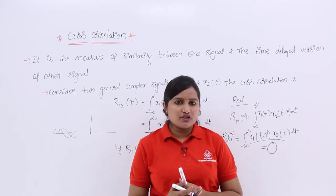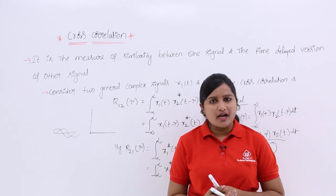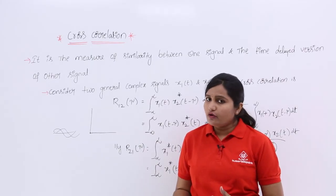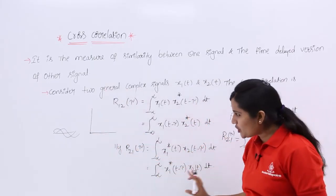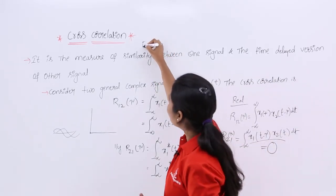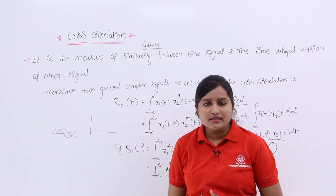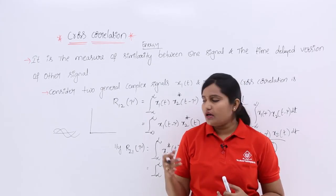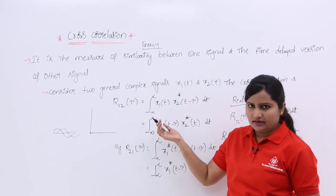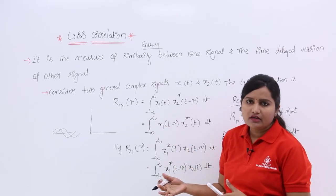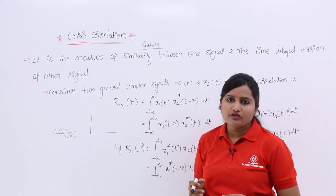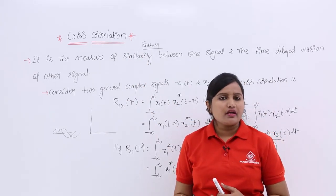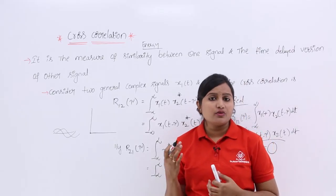This covers the fundamentals of cross correlation function. In the next class, we will see properties of cross correlation. Note that these general equations are for energy signals. In future classes, we will also deal with the cross correlation function for power signals, where the equation includes a limit as T tends to infinity of 1/T. That formula will be given in another class.